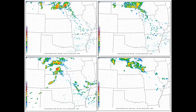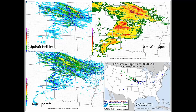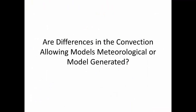This was a 24-hour forecast of just four models from the SSEO. We can see there's some placement difference in the location of the convection at forecast hour 24, but we didn't want to concentrate so much on the placement as on the differences in the intensity of the convection seen in some of the reflectivity. That extends to things such as updraft helicity, 10-meter wind speed, and maximum updraft within these supercells. In the SSEO, you can see the tracks of the individual supercells in the updraft helicity and max updraft. The big question for us was: are these differences in the convection-allowing models meteorological, or are they model-generated?